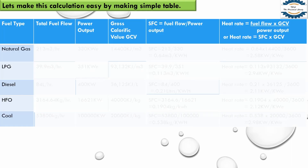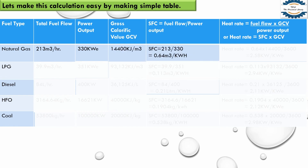To make our calculations simple, let's create a chart. On the left-hand side we have written all the fuels, and we need to find total fuel flow and power output for each fuel power plant. With these two parameters and the gross calorific value, we can find specific fuel consumption and heat rate. Heat rate equals specific fuel consumption multiplied by GCV, divided by 3,600 to convert hours to seconds. For natural gas, we've already done the calculation and are writing it down here.